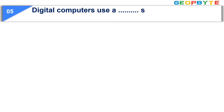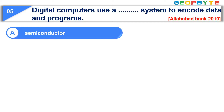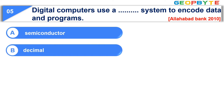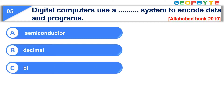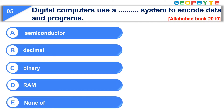Moving to question number five. Digital computers use a blank system to encode data and programs. Option A: Semiconductor. Option B: Decimal. Option C: Binary. Option D: RAM. Option E: None of these. The correct answer is option C, Binary.